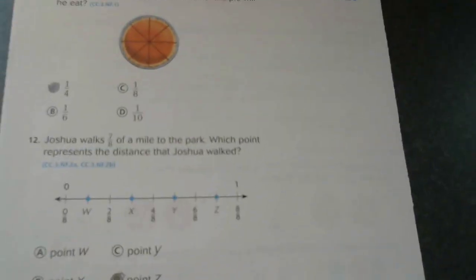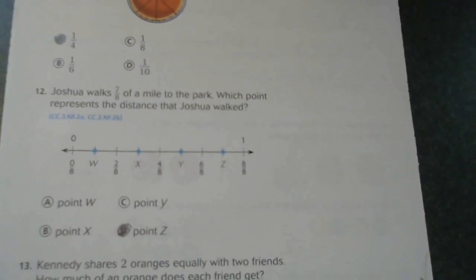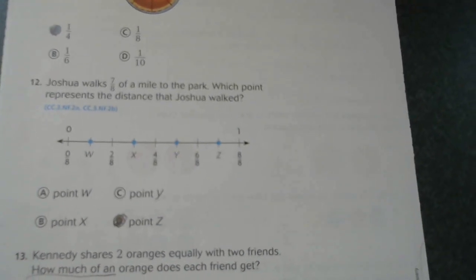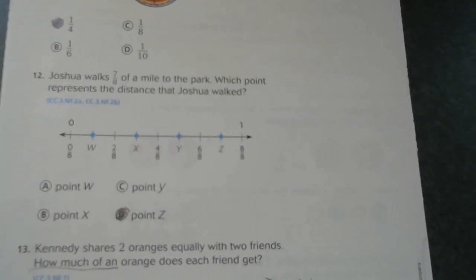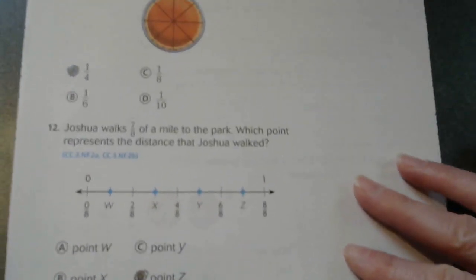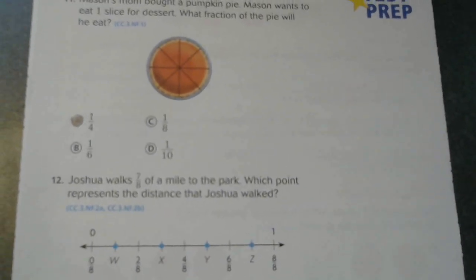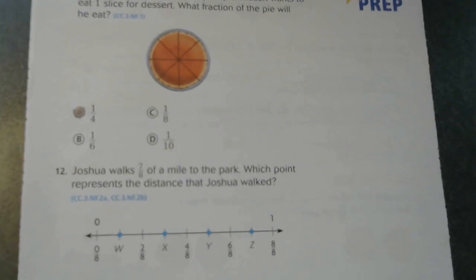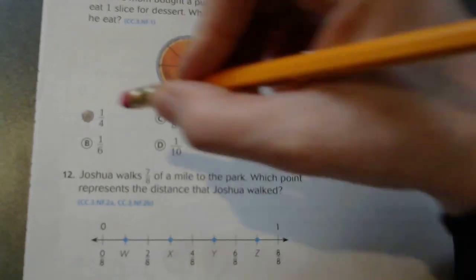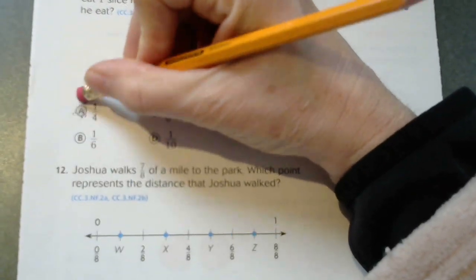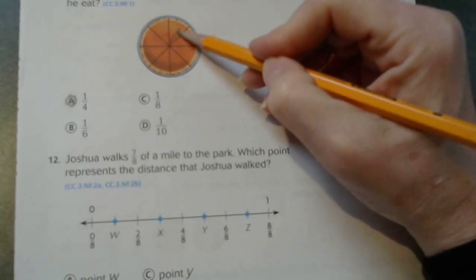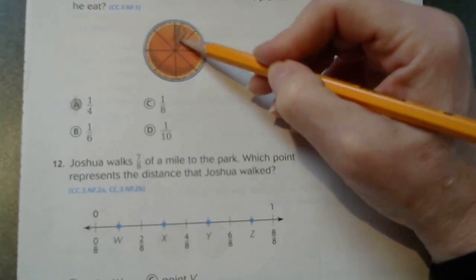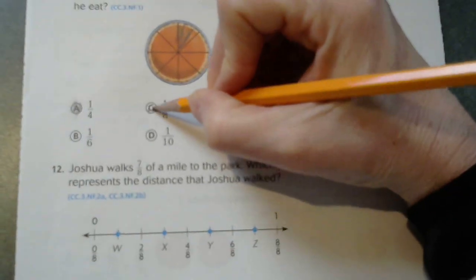Mason's mom bought a pumpkin pie. Mason wants to eat one slice for dessert. What fraction of the pie will he eat? Well, if you look closely at the pie, it is broken into one-eighths. So he will eat one-eighth of the pie.